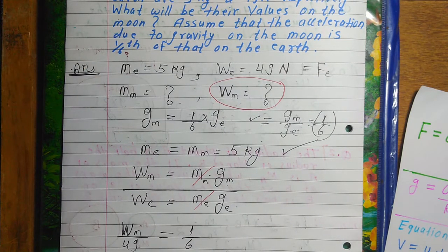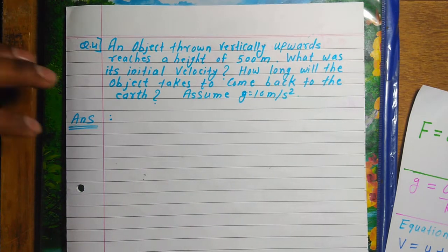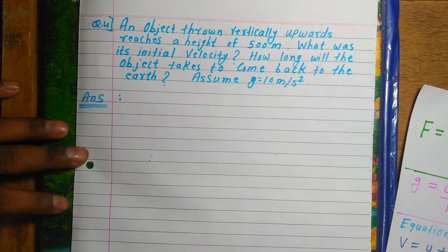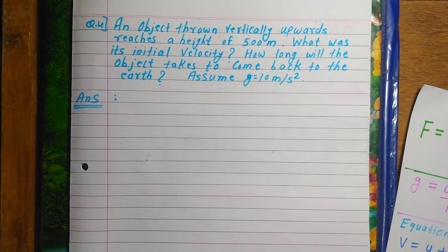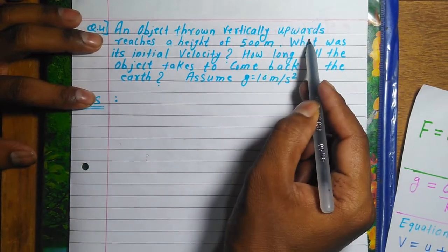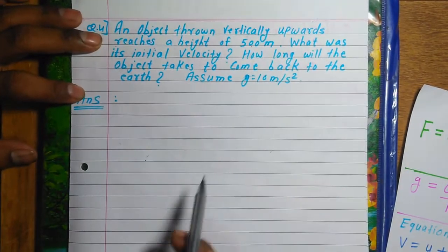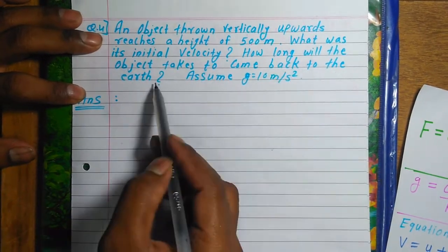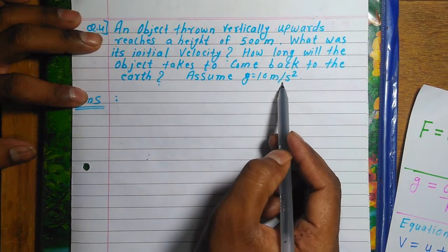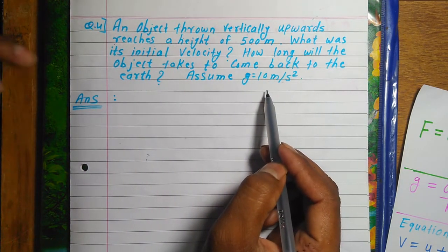After understanding Question 3, we move to Question number 4. Question number 4 says: An object is thrown vertically upward and reaches a height of 500 meters. What was the initial velocity? How long will the object take to come back to Earth? Assume g = 10 m/s².